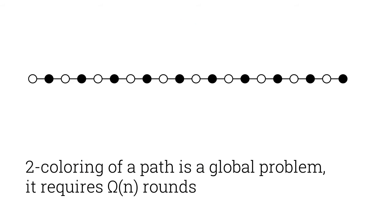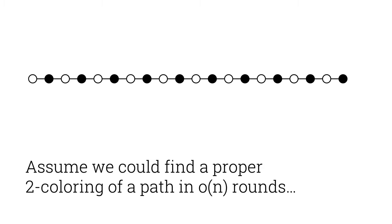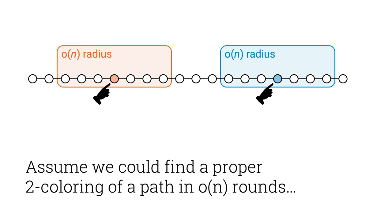Something as simple as coloring a path with two colors is an example of a global problem. Let's quickly prove it. Assume you had some way of solving it in sublinear time. So along a long path, these two nodes could pick their own colors based on the information in their local neighborhoods only. Let's assume the distance between the nodes is even, so they pick the same color. Let's say black.